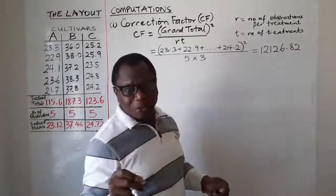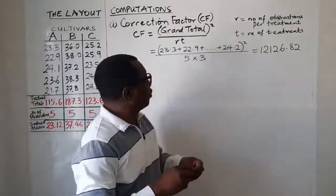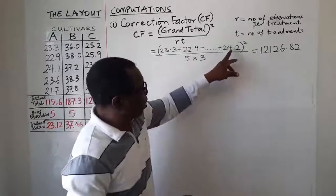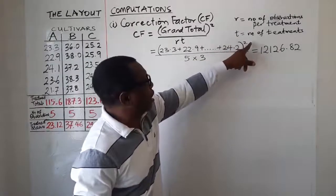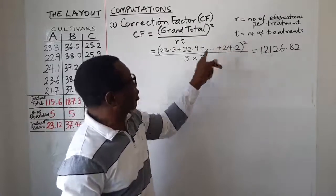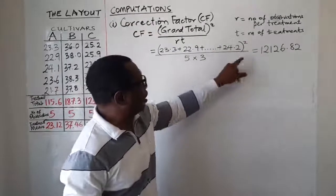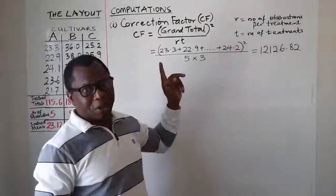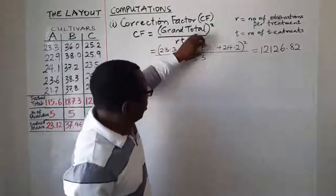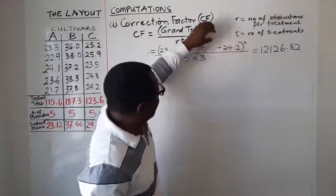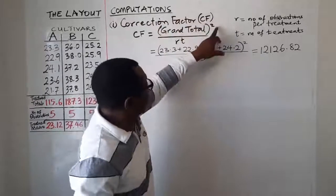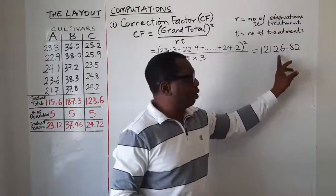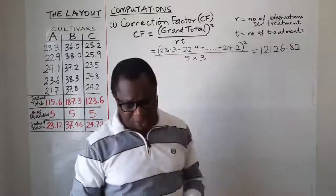You must take note: you must do the addition first and square the numerator before dividing. If you divide before you square you will be wrong. So add up all the values to get the grand total, square that grand total, then divide — that gives you your value for the correction factor.